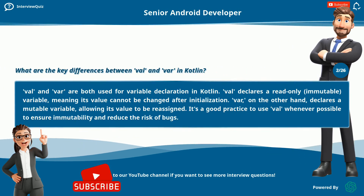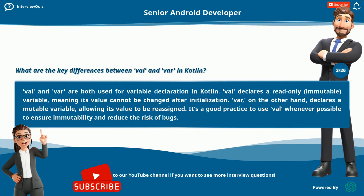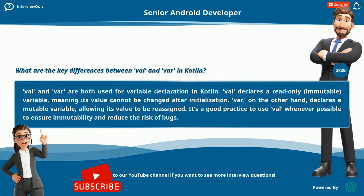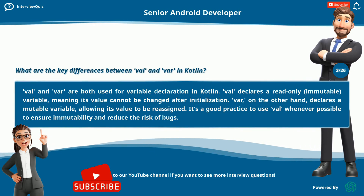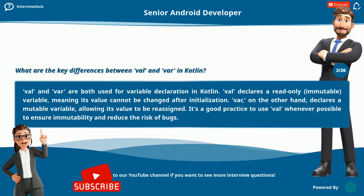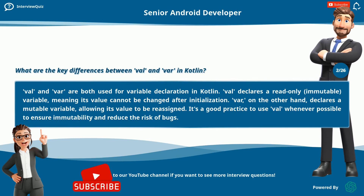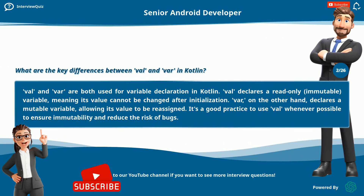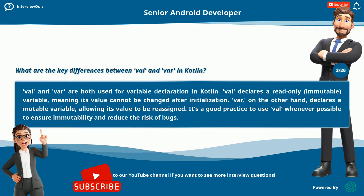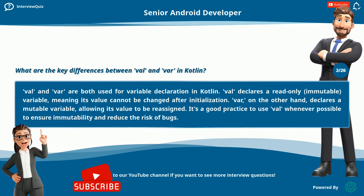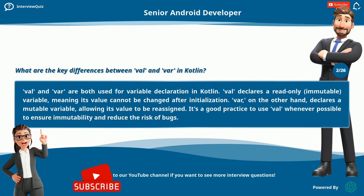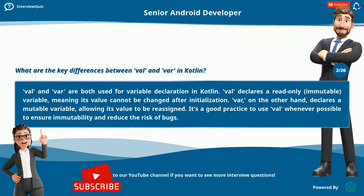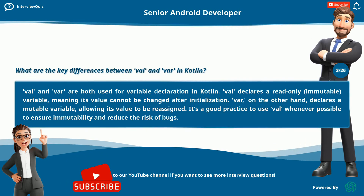What are the key differences between VAL and VAR in Kotlin? VAL and VAR are both used for variable declaration in Kotlin. VAL declares a read-only, immutable variable, meaning its value cannot be changed after initialization. VAR, on the other hand, declares a mutable variable, allowing its value to be reassigned. It's a good practice to use VAL whenever possible to ensure immutability and reduce the risk of bugs.